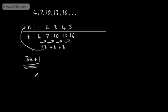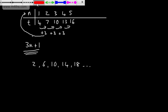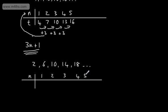So let's look at another sequence. Let's say we have now 2, 6, 10, 14, 18, and so on and so forth. We can see that this is going up by 4 each time. I'm going to put this in a table. We're going to have n — the position of the term in the sequence — so 1, 2, 3, 4, and 5. The terms are 2, 6, 10, 14, and 18. We can see this is going up by 4 each time — do check each one.